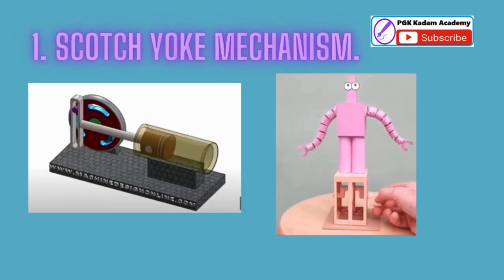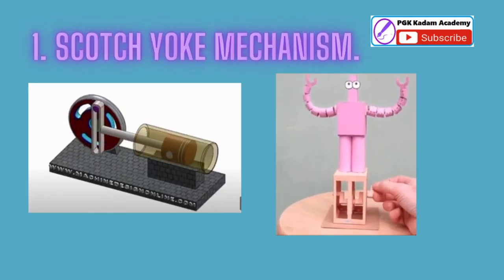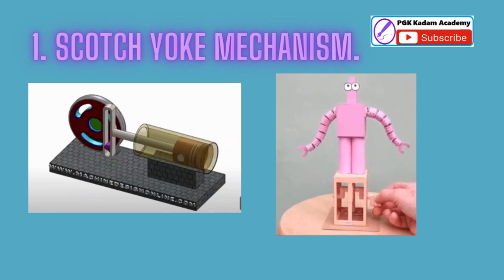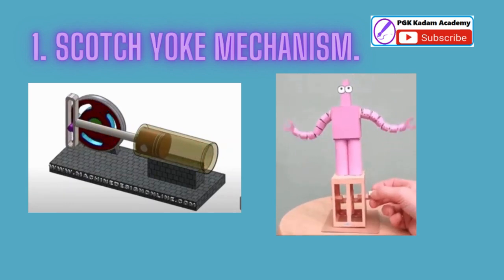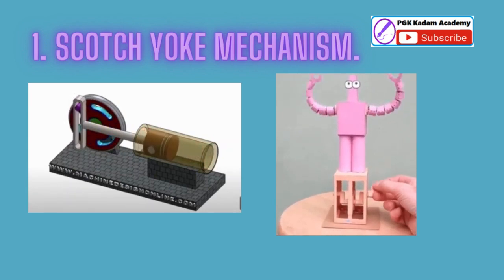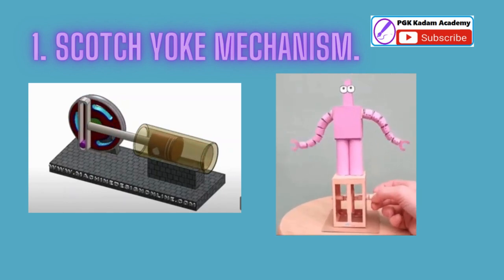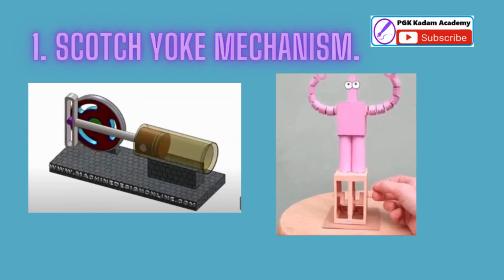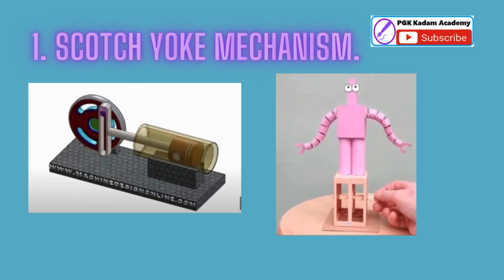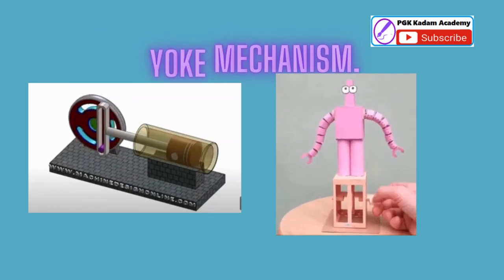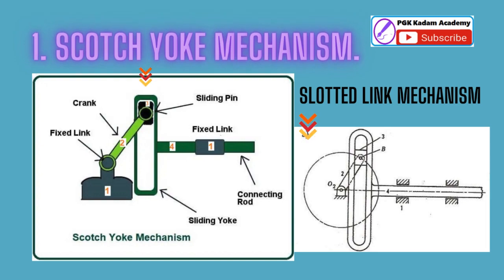A Scotch yoke mechanism is a mechanical device that converts rotary motion into linear motion or vice versa. It is also known as a slotted link mechanism. It is a simple mechanism implemented in various applications, right from toys to some engines. It converts rotational motion into a slider or linear motion and vice versa.